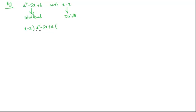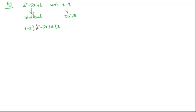Now divide the first term of the dividend by the first term of the divisor. In this case, we get the quotient as x. And by rule three, multiply this quotient x with this divisor x minus 2.